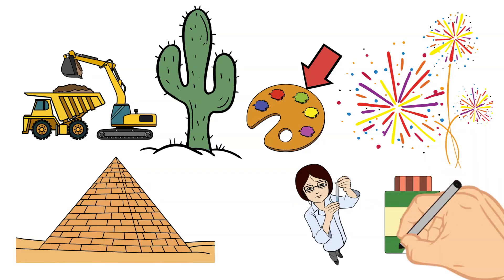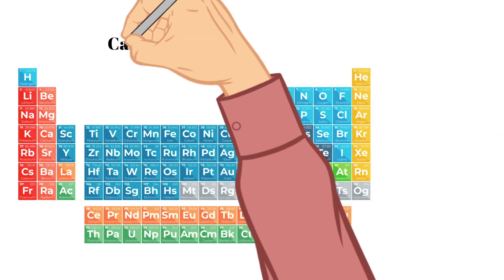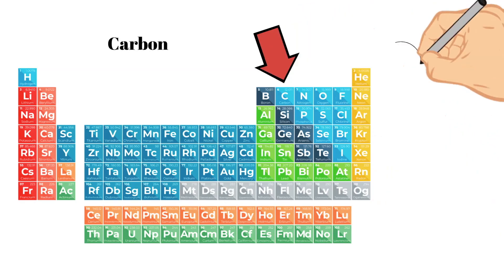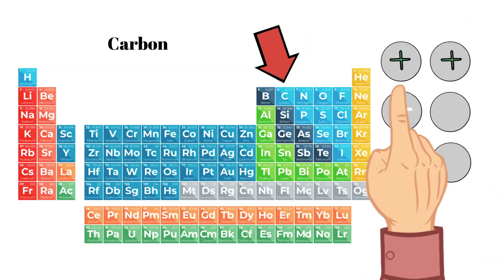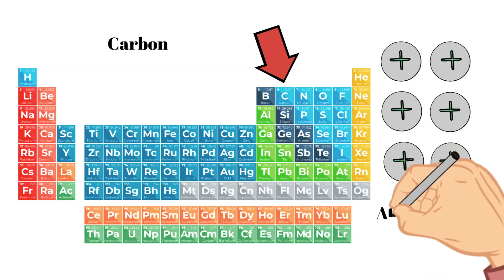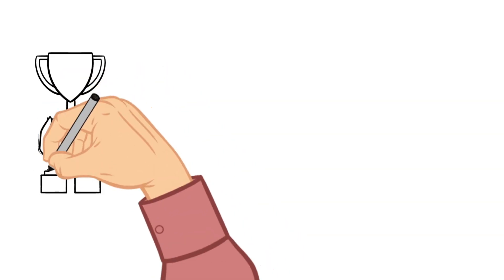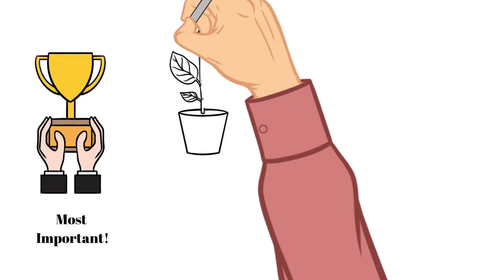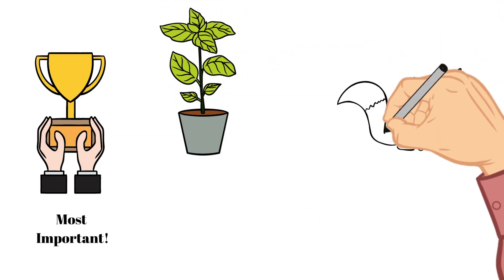The next element we're going to be talking about today is carbon. Carbon has an atomic number of six, meaning there are six protons in the nucleus, and it has an atomic mass of 12. Carbon is one of the most important elements to life on planet earth. It can form more compounds than any other element found on earth and is one of the most important building blocks for plants and animal life.